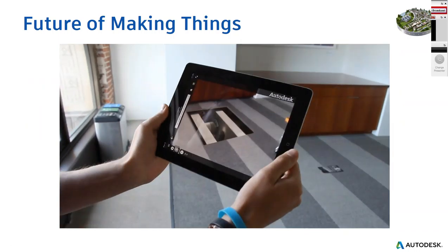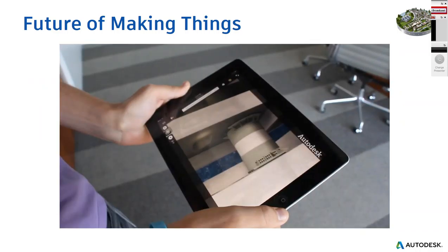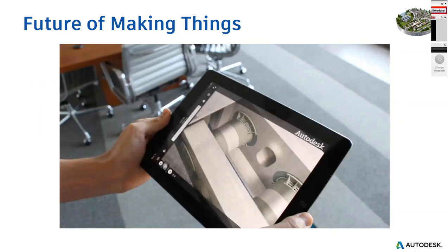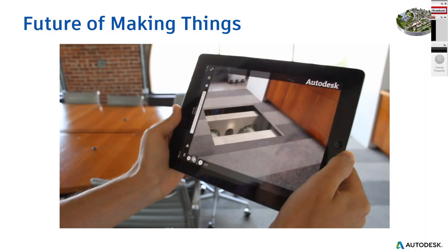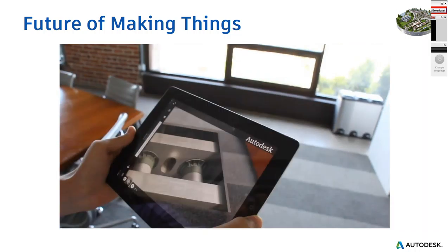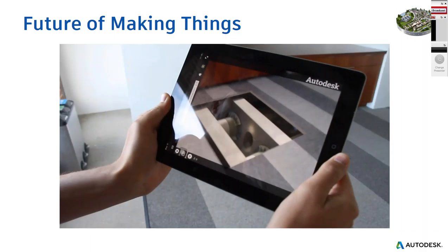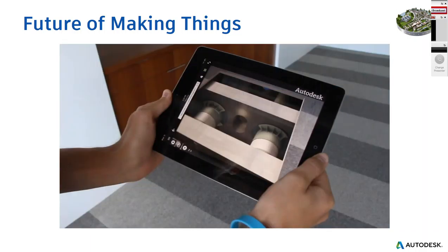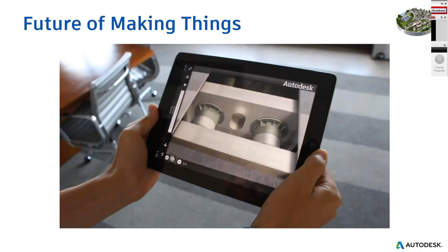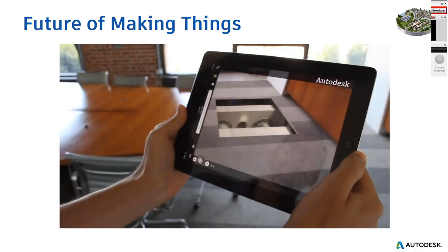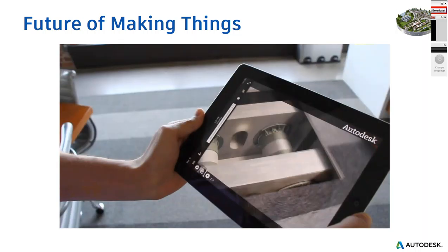This is a glimpse of the future of making things — some of the technologies we're heading towards. One example is our reality tools where you can place an image, barcode, or QR code on an object, wall, or floor to reveal what's hidden inside. So if you're out on site doing maintenance and want to know if there's a pipe in a wall or under the floor, you can scan that barcode to see what's behind it before engaging in any maintenance or operation.